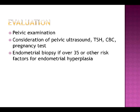Evaluation of a woman with menorrhagia usually includes a pelvic examination, a pregnancy test, a TSH, and a CBC. If the physician notes any abnormalities on pelvic exam or is unable to adequately palpate the uterus or adnexa, a pelvic ultrasound may be indicated. Women over 35 with menorrhagia should also be evaluated with an endometrial biopsy. If clinically indicated, measurement of other blood tests to exclude bleeding disorders and systemic illness may be ordered.